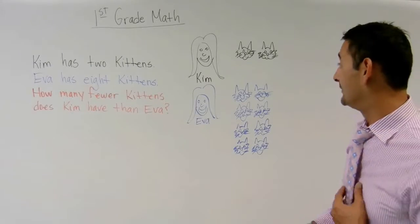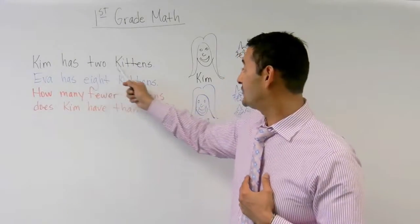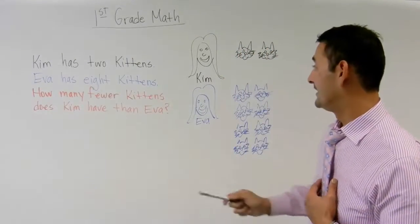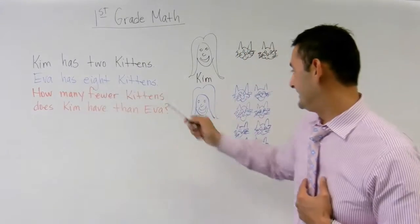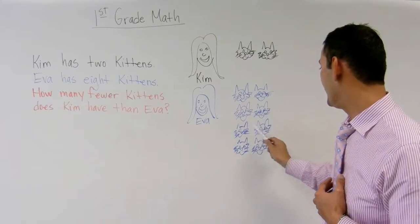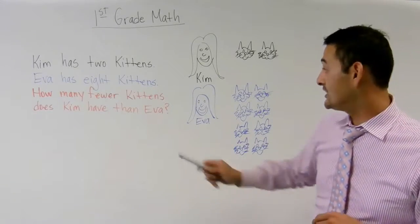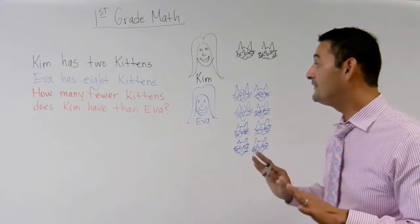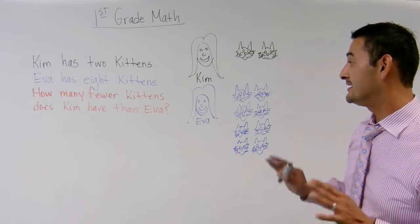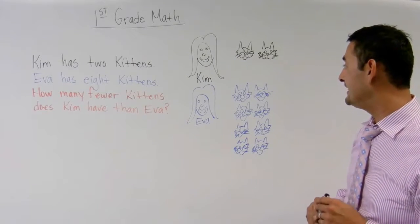So now let's go back to the problem. So let's see, Kim has two kittens, one, two. Eva has eight kittens, one, two, three, four, five, six, seven, eight. So now let's go back to the question. The question says, how many fewer kittens does Kim have than Eva?